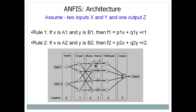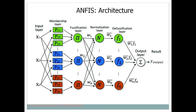In ANFIS, two rules are formulated. x1 and x2 are input variables, while a1, a2, b1, b2 are fuzzy variables. The output is generated based on these. The ANFIS architecture is a 5-step process: the first step is the input layer where x1 and x2 are provided; these are converted to fuzzy values; then come the IF part rules, the THEN part, and finally the output.